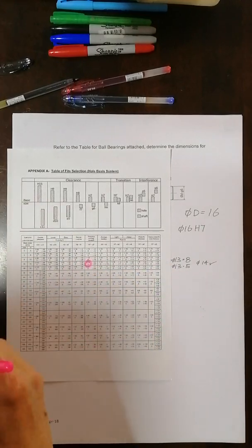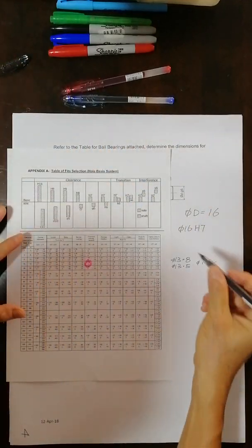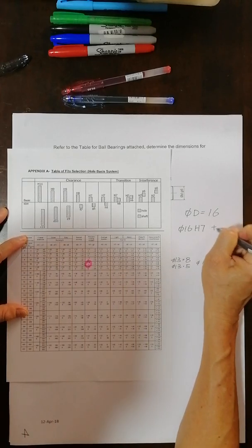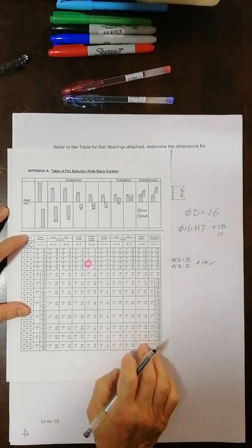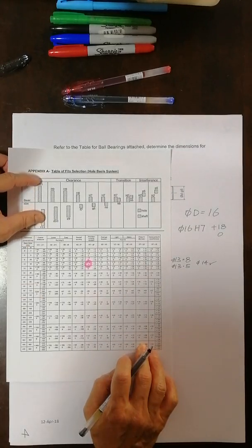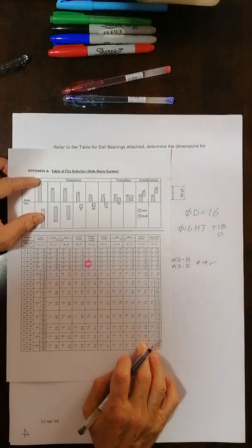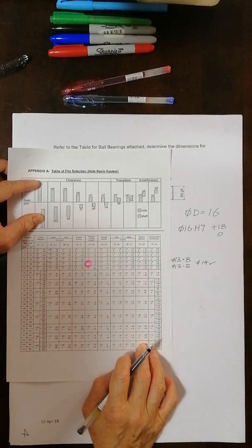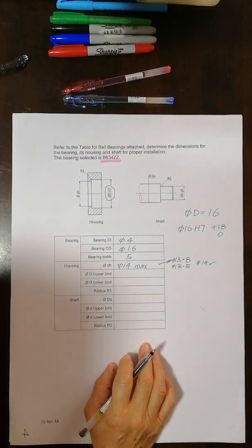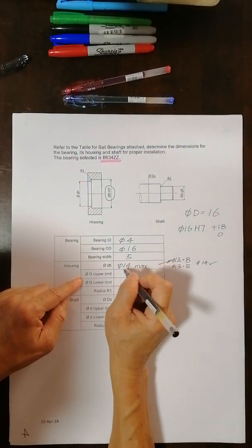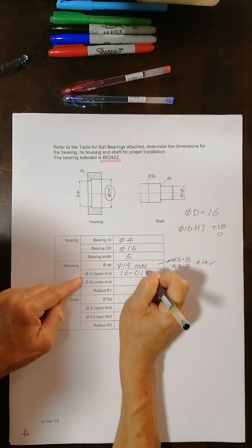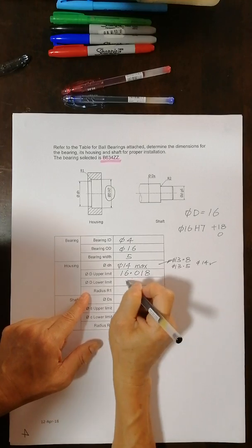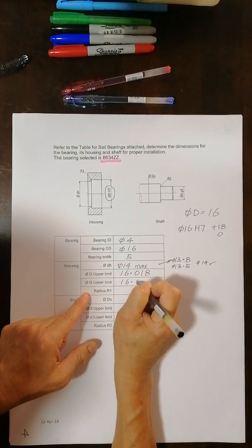I have plus 18 and 0. 18 and 0. This is what you learn in lecture 2. So the upper limit here will be 16.018. Lower limit will be 16.0.